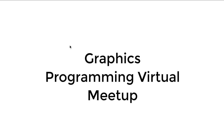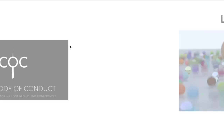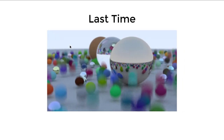Hello, welcome to the Graphics Programming Virtual Meetup. Last time we implemented focus blur, motion blur, and movable camera, so we can have a nice final scene where objects out of focus far away or really nearby get blurred. We also have a bunch of moving spheres in the scene which exhibit the motion blur effect.